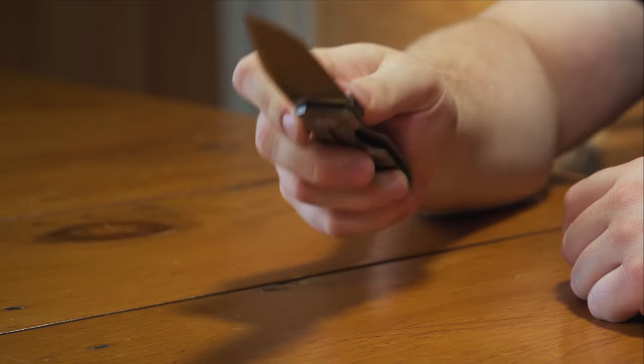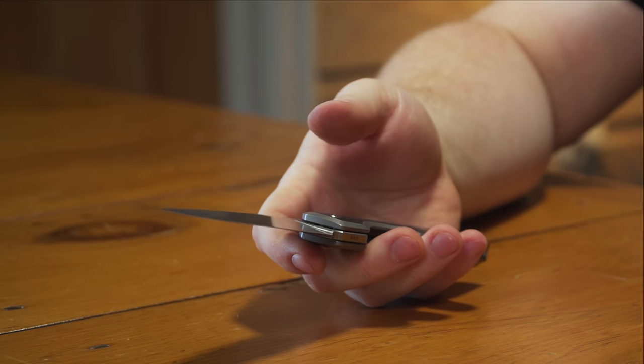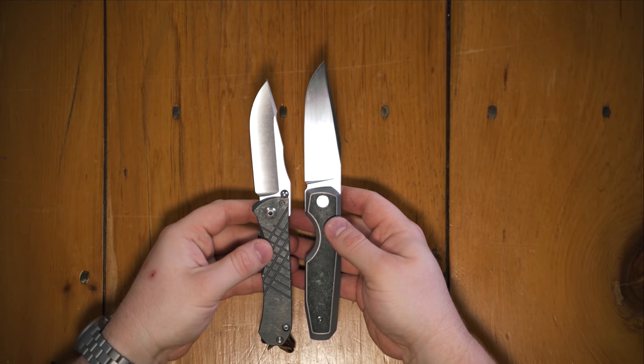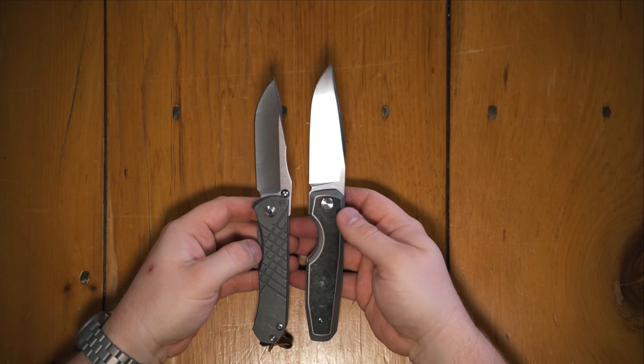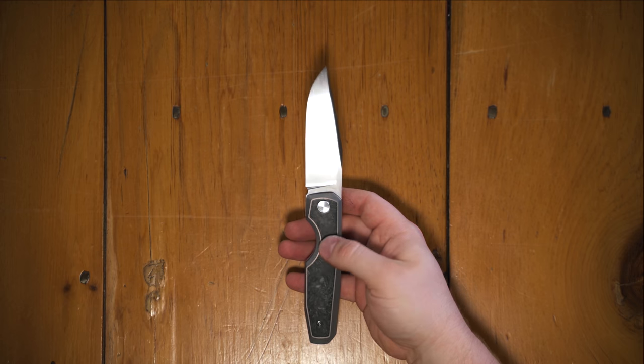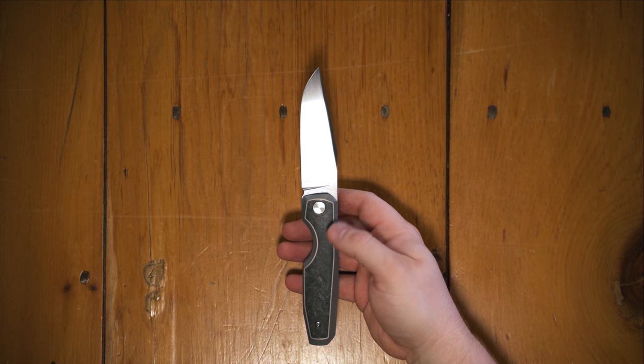Very different action from the Umnumzaan and it's actually bigger. The Umnumzaan is a big knife. Look at this. This knife is significantly larger than the Umnumzaan and it is large and in charge.